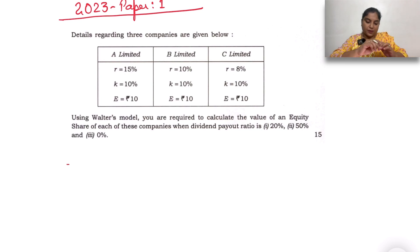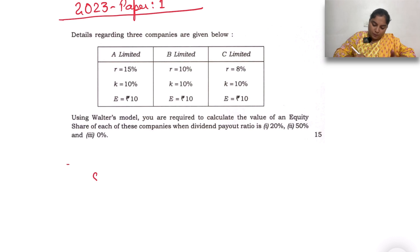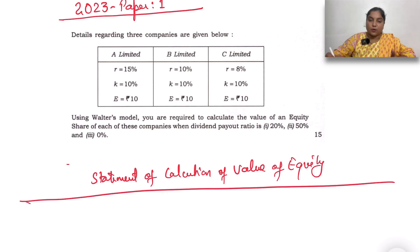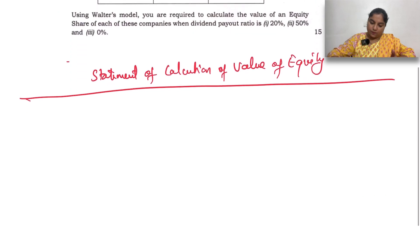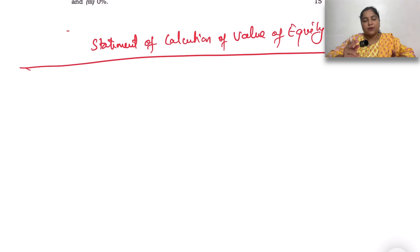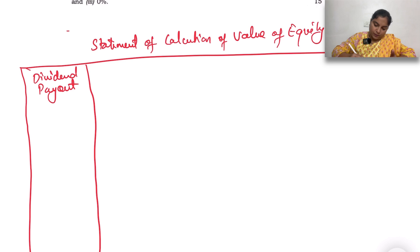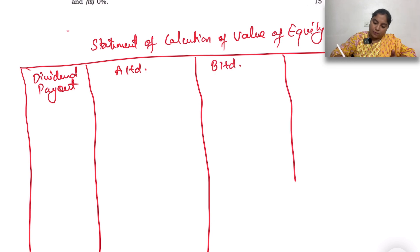Let's solve together and compute the value of equity in all three cases. We have three companies: A Limited, B Limited, and C Limited. I'm going to prepare a table — a Statement of Calculation of Value of Equity. You can do it in any form; I'm just doing it in the best possible way. We have the three dividend payout ratios — 20%, 50%, and 0% — for each of the three companies.